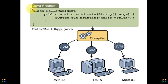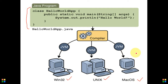Java is a platform independent language. This means if you compile a Java program and bytecode is generated, you can run that bytecode on Win32, Unix, or Mac OS platforms. In this video tutorial, we will start with the basic programming of the Java language.